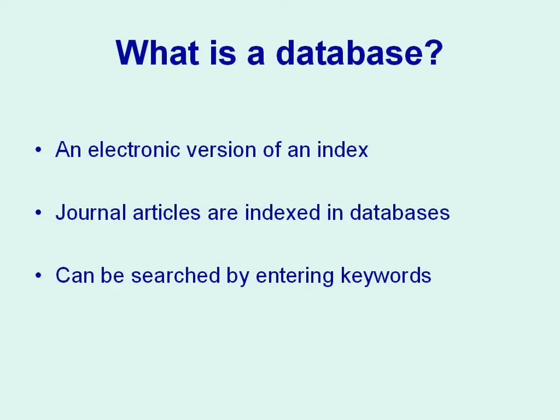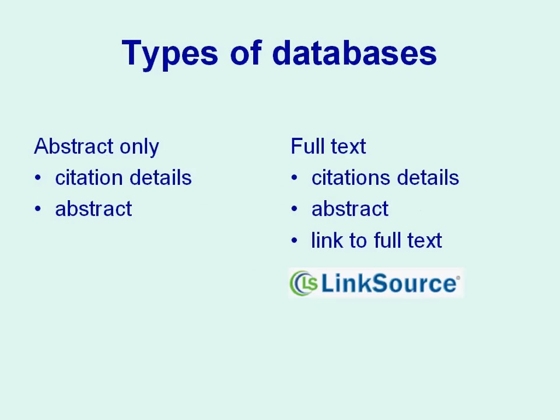Databases provide a much more sophisticated way to find relevant journal articles. Traditionally, databases only gave the means to find articles — providing citation details including the title, author, journal title, year, volume number, and page numbers. You will often find an abstract giving a brief overview. Increasingly, databases also provide a link to the full text of the article where an electronic version is available.